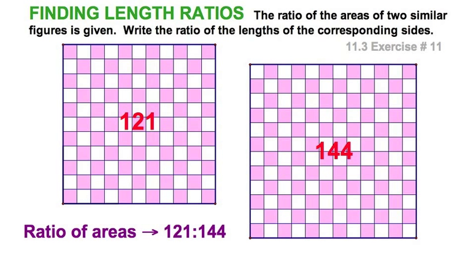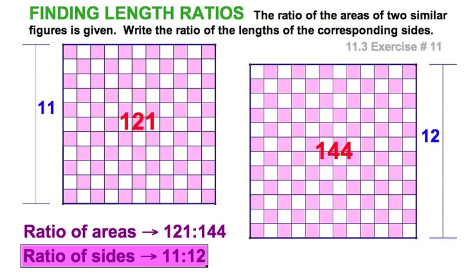So let's relive the previous problem with a different set of numbers. A ratio of areas, 121 to 144. And again, just to help you visualize, you recognize both of those as perfect squares and, of course, they are the squares of 11 and 12, respectively. And, therefore, the ratio of the sides would be 11 to 12.